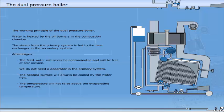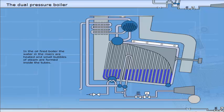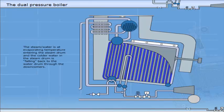This will reduce possible deposits on the heating coil in the secondary steam drum. In the oil-fired boiler, the water and the risers are heated and small bubbles of steam are formed inside the tubes. The steam-water mixture, at evaporating temperature, enters the steam drum, and the colder water in the steam drum is falling back to the water drum through the downcomers. This circulation will continue as long as we are firing the boiler.